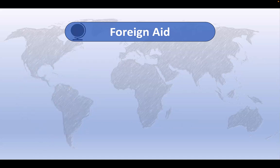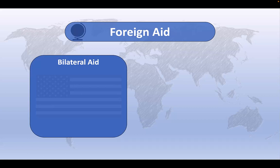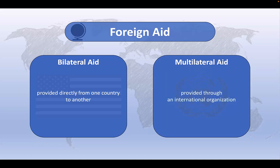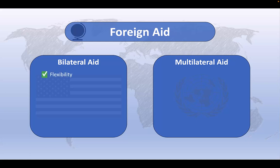Foreign aid can take a variety of forms. We can, for example, distinguish between bilateral aid, which is provided directly from one country to another, and multilateral aid, which is provided through an intermediary organization like the United Nations or the World Food Program or the World Bank, and usually involves pooling resources from multiple donors for specific projects or countries. Each type of aid has advantages and disadvantages. Bilateral aid is generally more flexible, as donor countries can tailor assistance to meet the needs and priorities of the recipient. From the perspective of the donor country, bilateral aid also has the advantage of enabling them to exert influence over the recipient country, often by attaching conditions such as policy reform or political alignment.